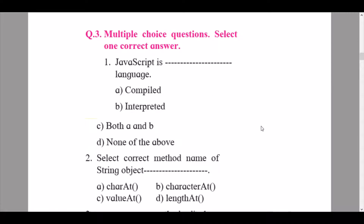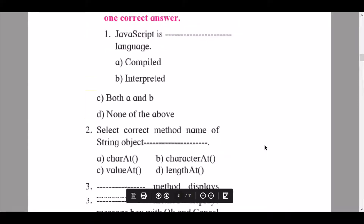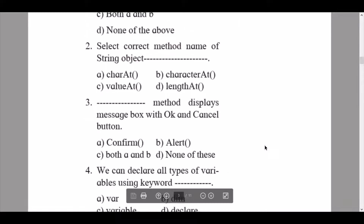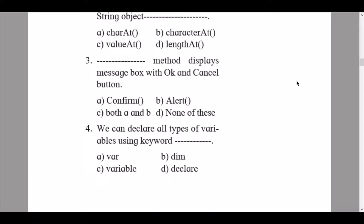Question 2: select correct method name of string object — the answer is option A, charAt. Question 3: dash method displays a message box with OK and Cancel button — the answer is option A. Question 4: we can declare all types of variables using keyword dash — the answer is option A, keyword var.